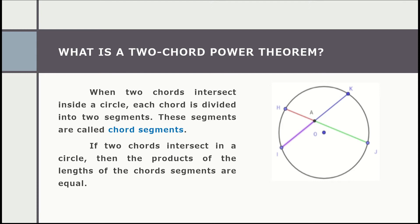In the given figure, the two chords that intersect inside the circle are line segment HJ and line segment IK. For line segment HJ, the two chord segments are HA and AJ. If one of the chord segments is unknown, we can apply the two-chord power theorem using the formula: HA · AJ = IA · AK.